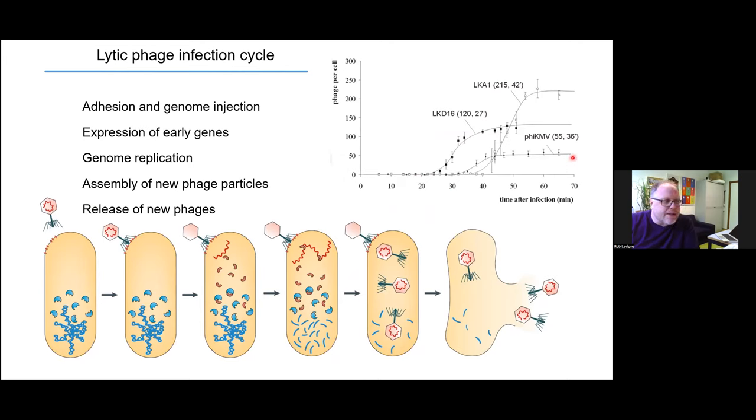What's truly remarkable is that this whole process happens within a matter of minutes to hours. What you see here is a one-step growth curve for three phages. If one phage particle infects for this phage LKD16, within 27 minutes, lysis occurs, and there is 120 progeny phages emerging. You have this self-amplifying effect that's really important for phage therapy. You start from one phage and end up with several tens or hundreds of phages after this infection cycle between half an hour and a few hours.